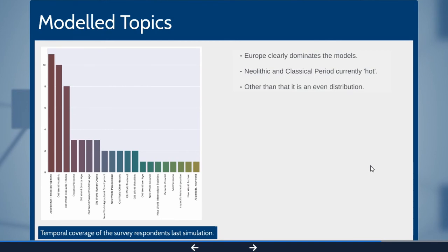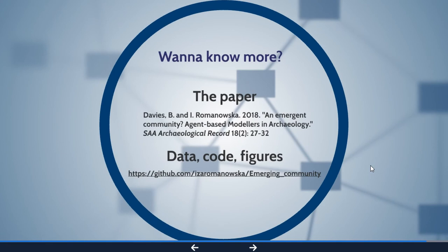The abstract models are the most common, but they're one category. Those two are both Europe, so it looks like Europe is dominating in terms of being a topic, which is interesting because from my personal experience quite a lot of Americans do agent-based modeling, but they seem to still apply it to topics related to Europe.